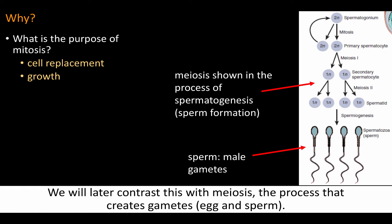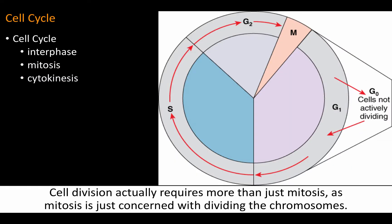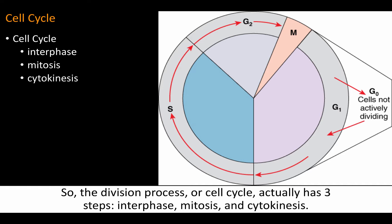We will later contrast this with meiosis, the process that creates gametes, egg and sperm. Cell division actually requires more than just mitosis, as mitosis is just concerned with dividing the chromosomes. The division process, or cell cycle, actually has three steps: interphase, mitosis, and cytokinesis.